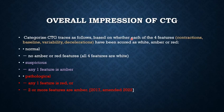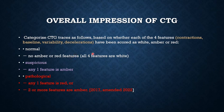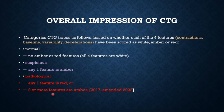Now coming to overall impression and categorization of CTG. It depends on four features: contractions, baseline fetal heart rate, variability, and deceleration. Each is scored as white, amber, or red. A normal CTG has no amber or red features — all four features are white. A suspicious CTG has any one feature that is amber. A pathological CTG has any one feature that is red, or two or more features that are amber.